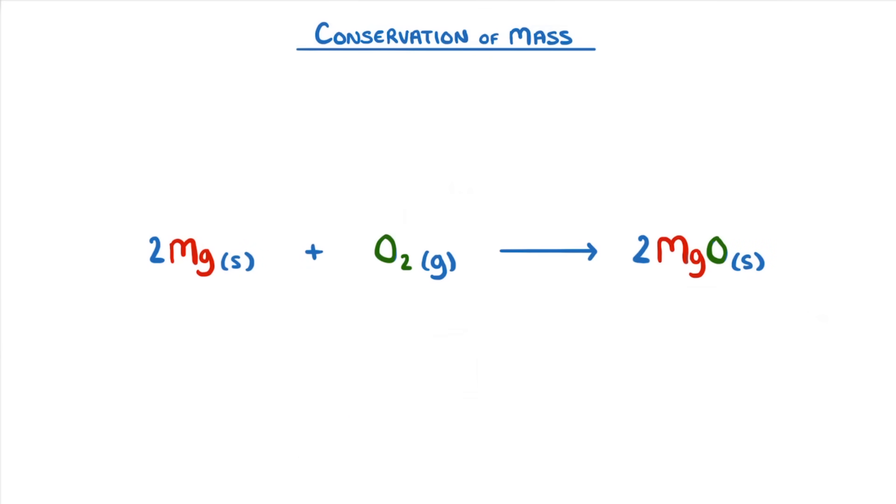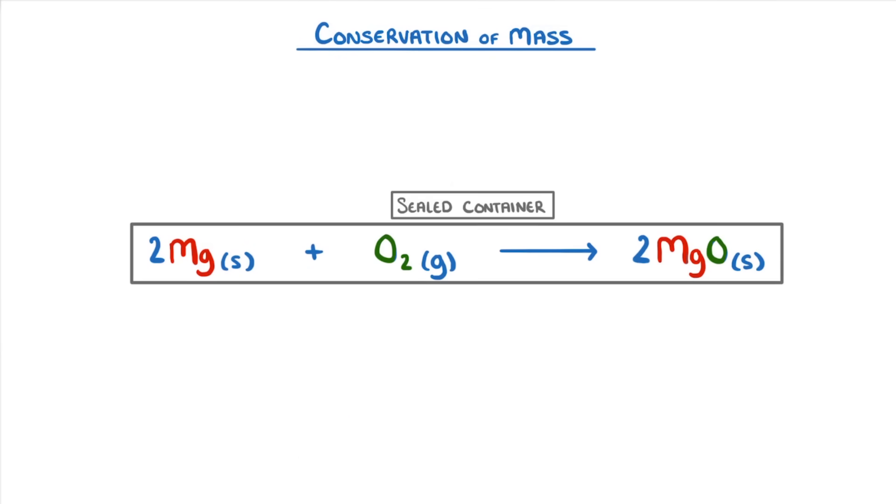In contrast, if we were to do the whole experiment inside a sealed container, the gas would be trapped within the container. So when we measured the reactant's mass, it would take into account both the gaseous oxygen and the solid magnesium. So the weight of our reactants would balance perfectly with the products.